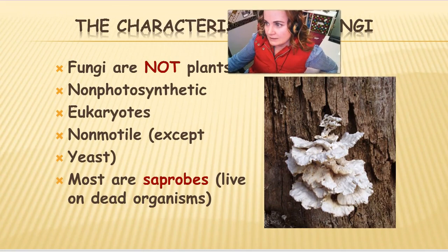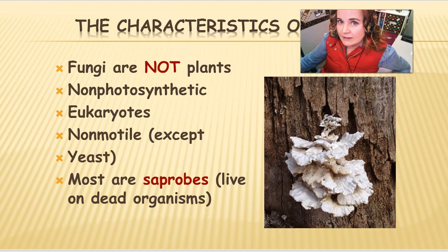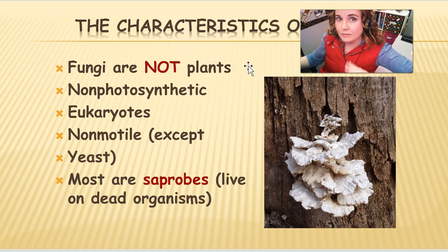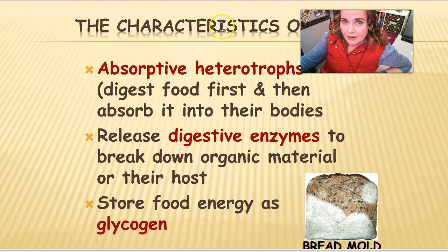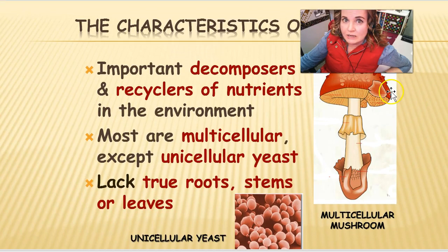Characteristics of fungus: remember, they're not plants and they're not animals. In fact, we'll find out a little bit later that plants are actually less closely related to fungi than animals are. They don't do photosynthesis; they are eukaryotic organisms; they don't move on their own except for yeasts. Most of them live off the remains of other things — they're saprobes, living on dead organisms. You've also used the terms detritivores and decomposers. They store their energy as a sugar called glycogen, and they are also important decomposers in the environment.